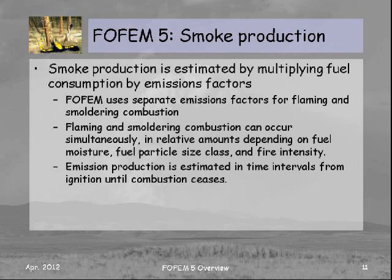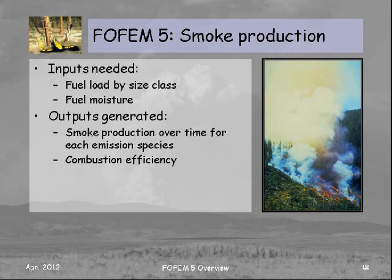We use published emissions factors to estimate smoke production, with separate factors for flaming and smoldering combustion, both of which can occur simultaneously. We can show a graph of emissions production over time and produce a table from when ignition starts until combustion ceases. The inputs are the same as for fuel consumption — fuel load by size class and fuel moisture — and outputs include the smoke production rate for all smoke components over time and the overall combustion efficiency.